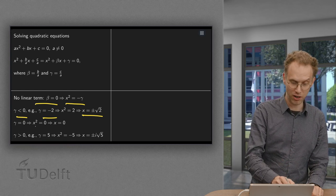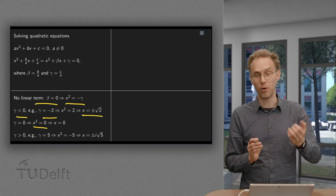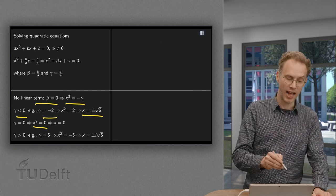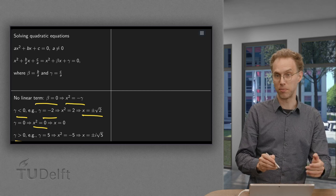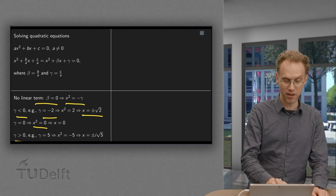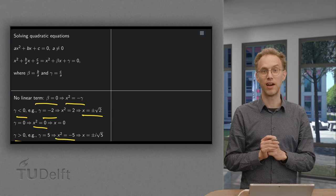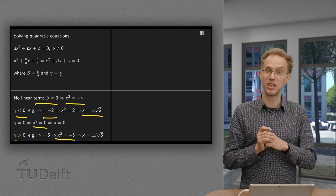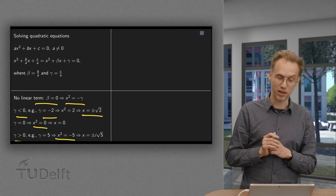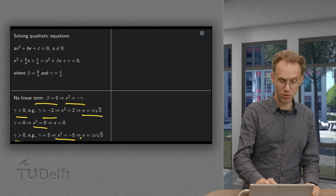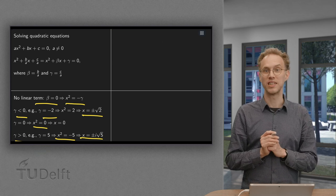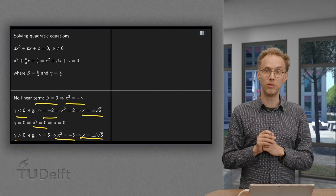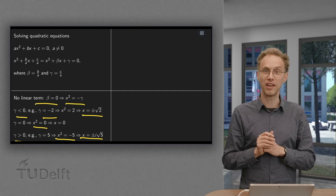If gamma equals zero, we have x squared equals zero, so only x equals zero as a solution. If gamma is positive, for example 5, then x squared equals minus 5. We are looking for numbers whose square equals minus 5, and the solution is plus or minus i times the square root of 5. So that is the case when we do not have a linear term — it is easy.